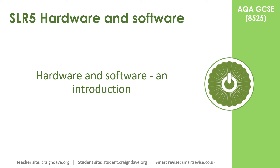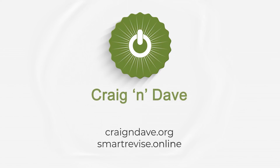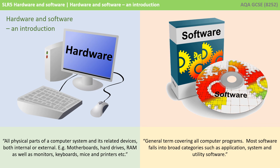In this video we give you a brief overview of hardware and software. Everything that makes up a computer system falls into one of two very broad categories: hardware and software.